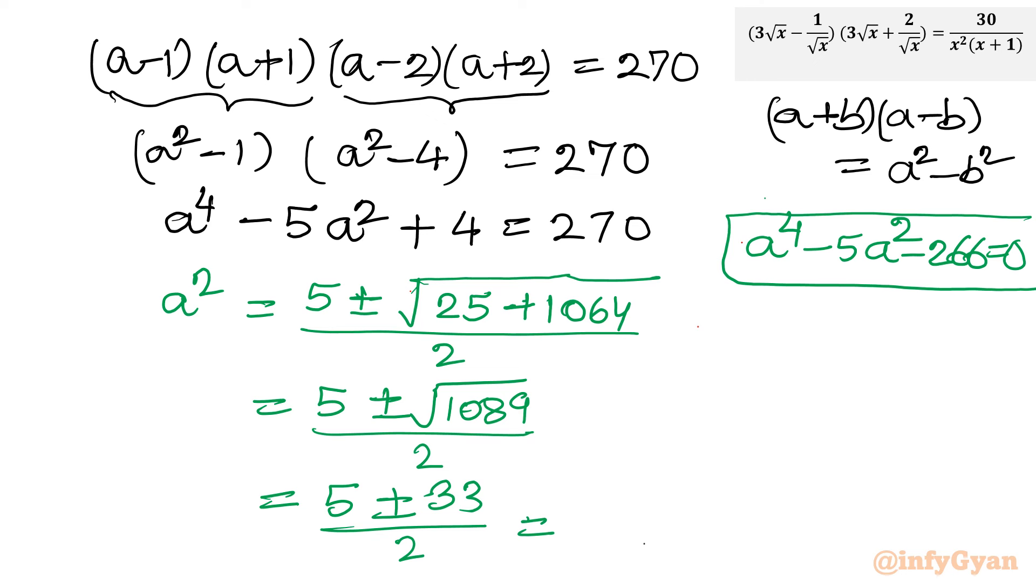Once I consider plus sign: 38 over 2; minus sign: -28 over 2. So we are getting a² value as 19 and -14. Two values of a². Remember, a² cannot be negative; it will generate complex solutions. So we can reject immediately this -14. Let me write: rejected as it will generate complex solutions.